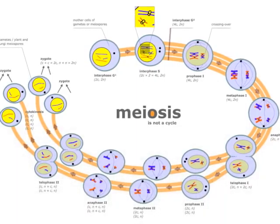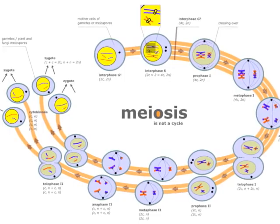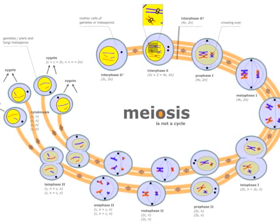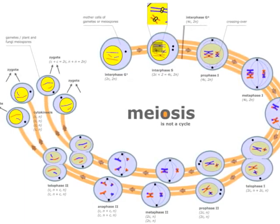Meiosis II is essentially mitotic division of the daughter cells of meiosis I. At the end of meiosis II, there will be four cells, each with single chromosomes. Meiosis II happens simultaneously in both daughter cells.